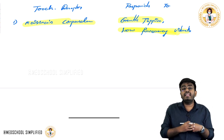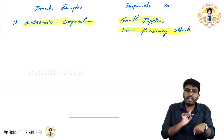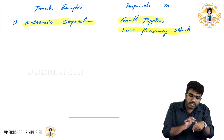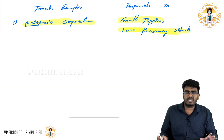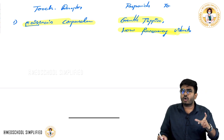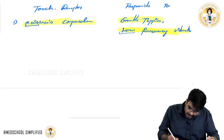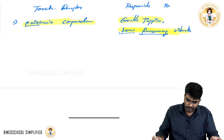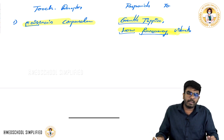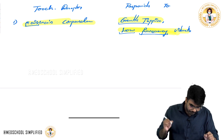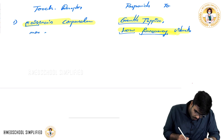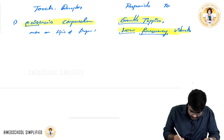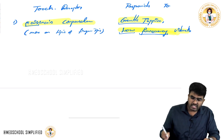Meissner's corpuscles on your skin will respond to a gentle tap. A gentle tap is going to stimulate Meissner's receptors. How I used to remember is: 'Miss' — just like a lady — so with a lady, how will you talk? You will talk with low frequency; you are not going to shout at her. And with girls, you are going to behave in a gentle way. So gentle tap and low frequency vibrations activate Meissner's corpuscles, which are mainly present on lips and fingertips.